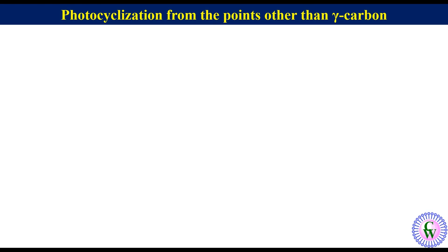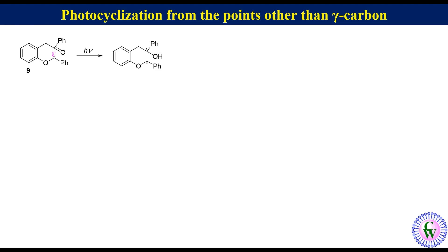If beta, gamma, and delta hydrogens are absent, then abstraction occurs from the epsilon position. For example, compound 9. The beta, gamma, and delta positions don't have any hydrogen but epsilon does. So upon irradiation, the epsilon hydrogen will be abstracted to produce a 1,6-diradical which will cyclize to produce 2,3-diphenyl-chroman-3-ol, compound 10.